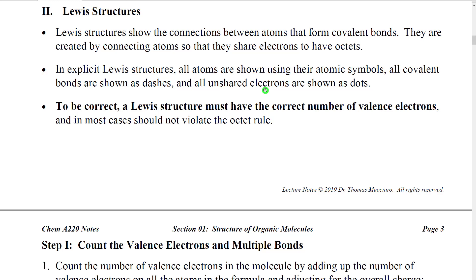We want to make sure we don't have incorrect Lewis structures, because that will make our other problems not work. Lewis structures show the connections between atoms when they form covalent bonds — we create them by connecting atoms so they share electrons to fulfill the octet rule in most cases. In explicit Lewis structures, all atoms are shown using their atomic symbols, all covalent bonds are shown as dashes, all unshared electrons are shown as dots, and the structure must have the correct number of valence electrons.